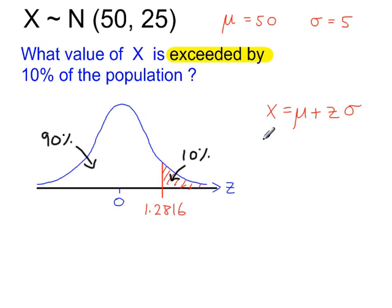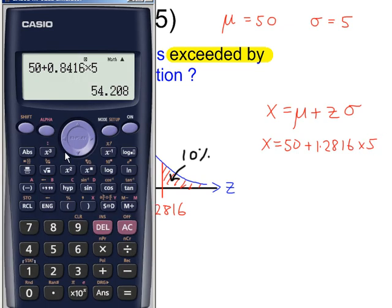Using the formulas before, x is equal to the mean plus 1.2816 times 5. 1.2816. And that gives us a value of 56.4.